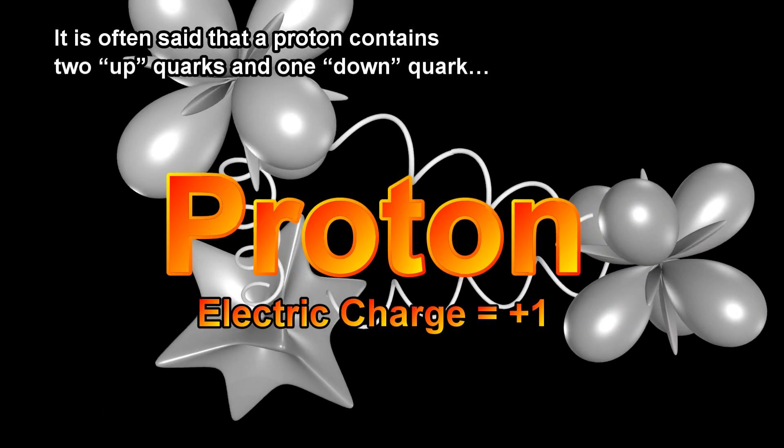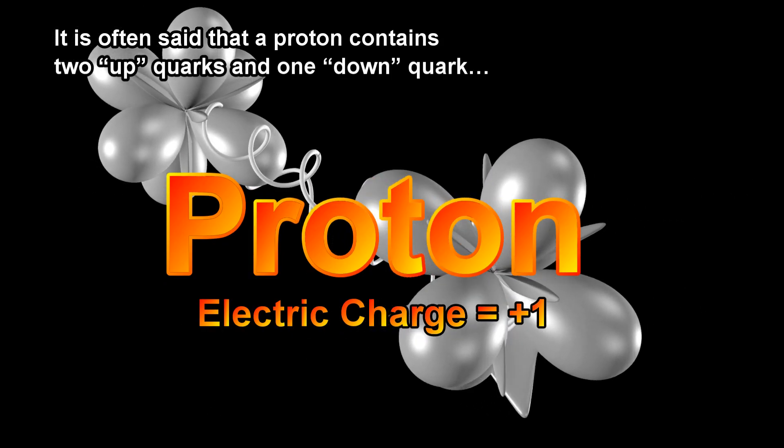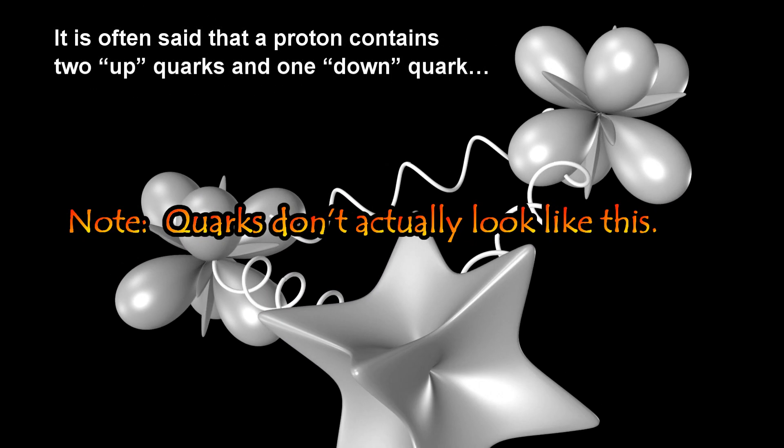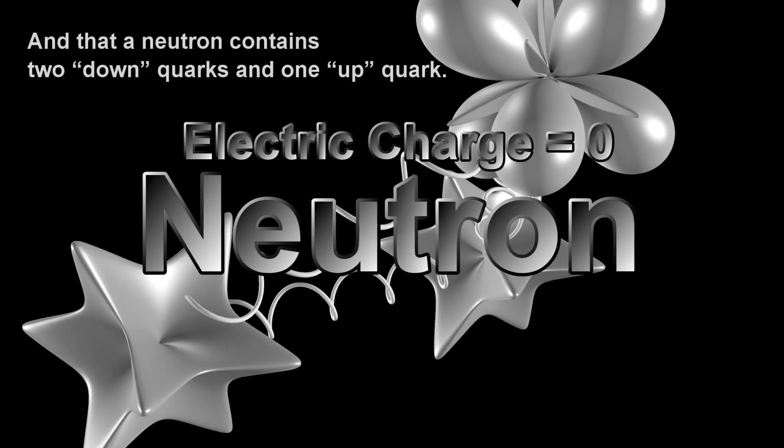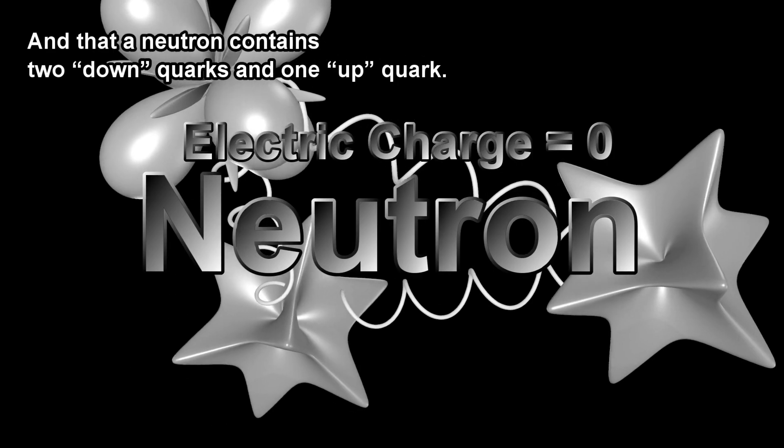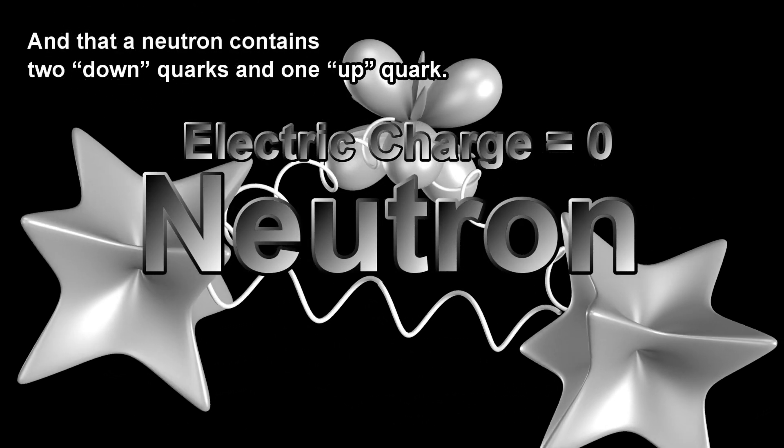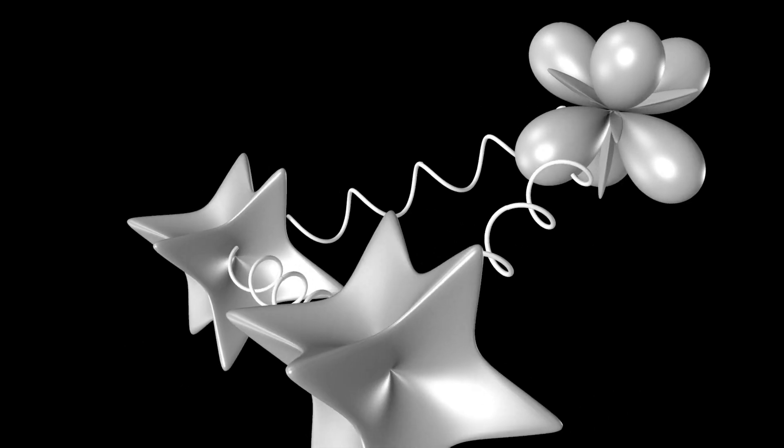It is often said that a proton contains two up-quarks and one down-quark, and that a neutron contains two down-quarks and one up-quark. But this is not entirely true.